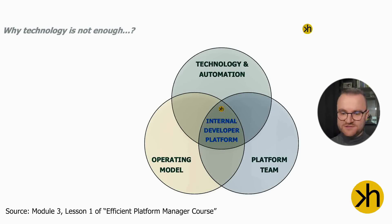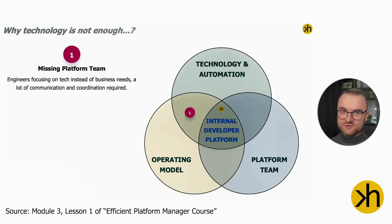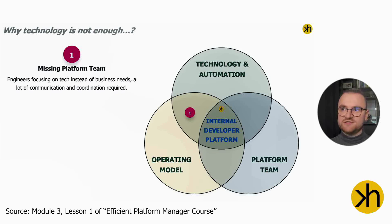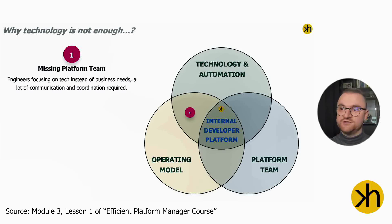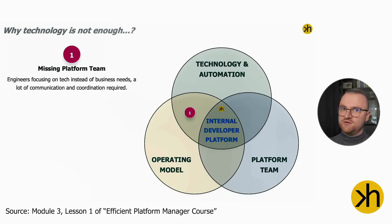If we have a defined operating model and automated technology, but we are missing a platform team, the responsibility for toolsets is distributed between other teams. This distribution affects platform services because multiple teams need to cooperate to provide one stream-aligned team with application development and operation capabilities. This requires time and effort, which leads to developer frustration, and without one person accountable, we can end up with chaos or burnout.